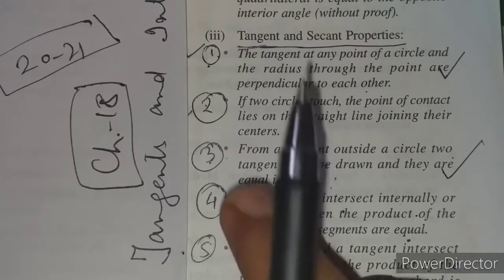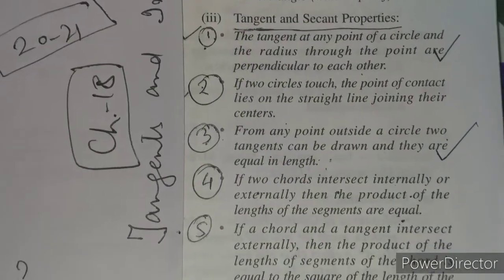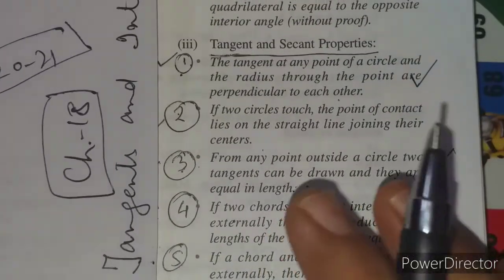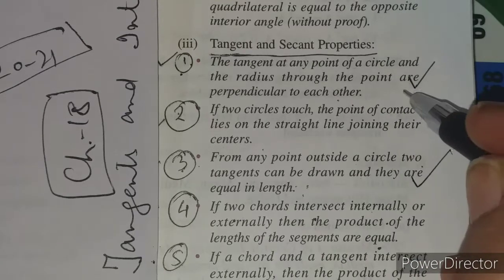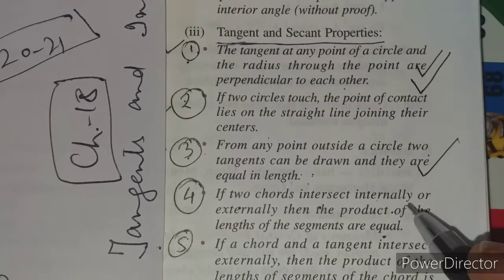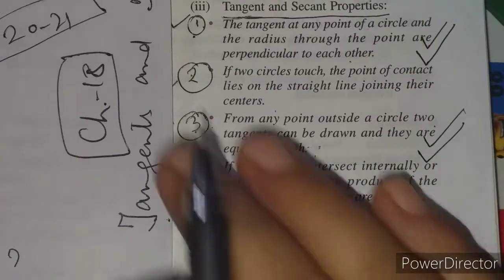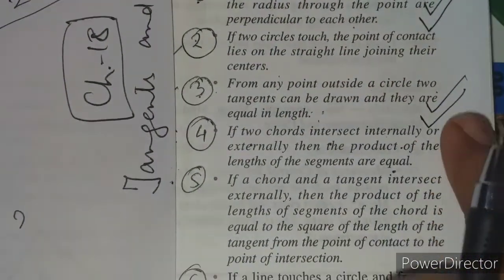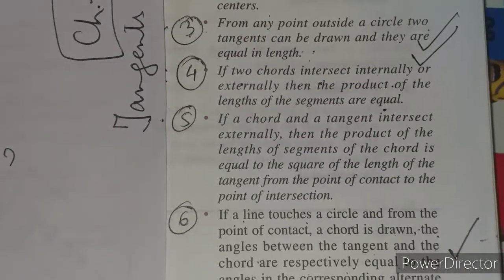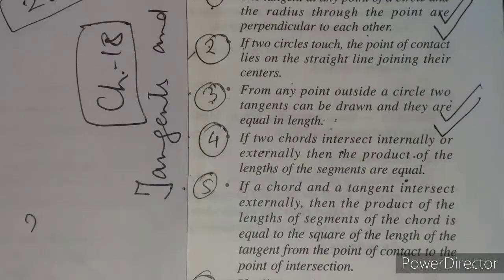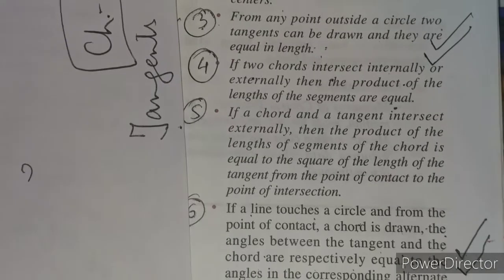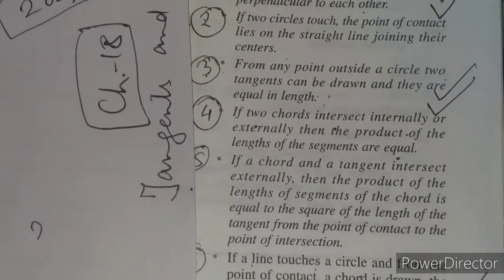From all these six properties, I am going to tell you that only property number one, property number three, and property number six — the last property — have been included in the syllabus for the session 2021.